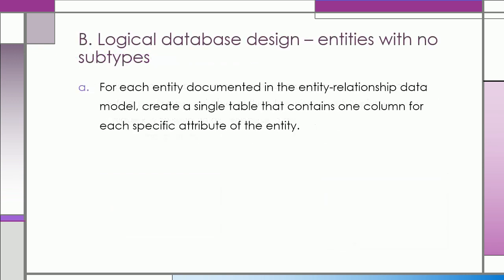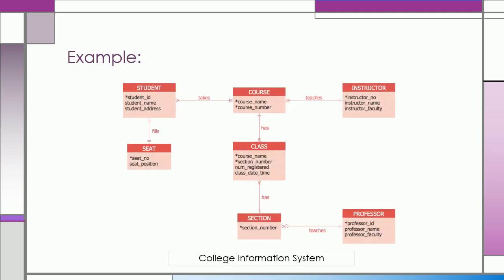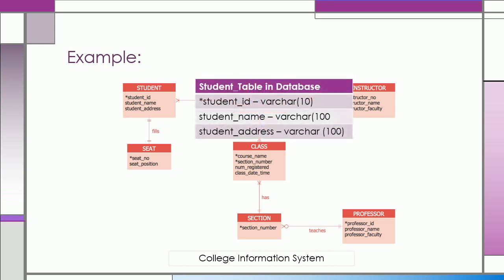The next part is the logical database design. For the entities with no subtypes, for each entity documented in the entity relationship data, create a single table that contains one column for each specific attribute of the entity. For example, in a college information system database, the student entity has its corresponding student table in the database, which has the following attributes: the student ID, the student name, and student address.